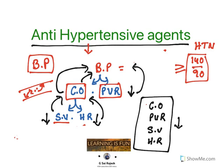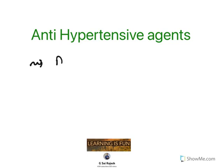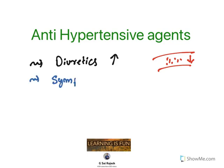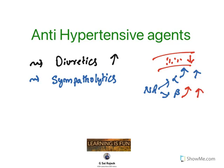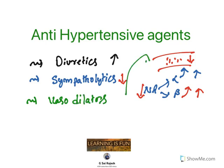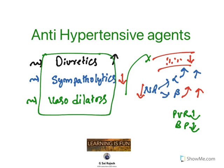The goal is to reduce these things. To classify antihypertensives in a simple way, there are three major groups. First, diuretics — they increase urinary output, reducing blood volume and thereby blood pressure. Second, sympatholytics — the sympathetic nervous system releases noradrenaline acting on alpha and beta receptors; alpha receptors cause vasoconstriction and beta receptors act on the heart, both increasing hypertension. Reducing sympathetic stimulation controls blood pressure. Third, vasodilators — if you dilate the blood vessel, peripheral vascular resistance is reduced and BP is reduced.